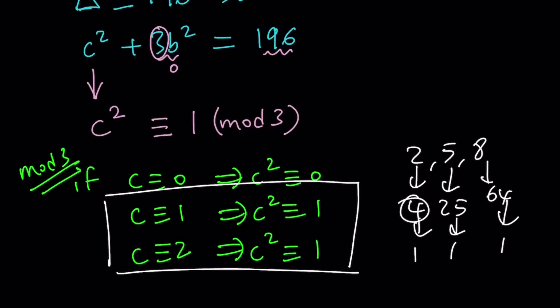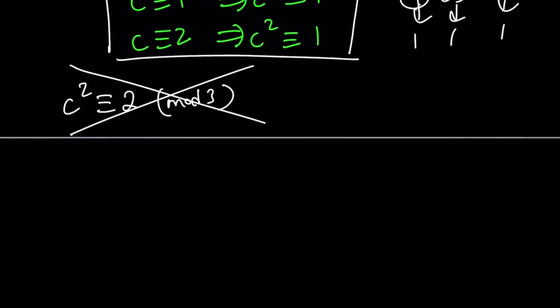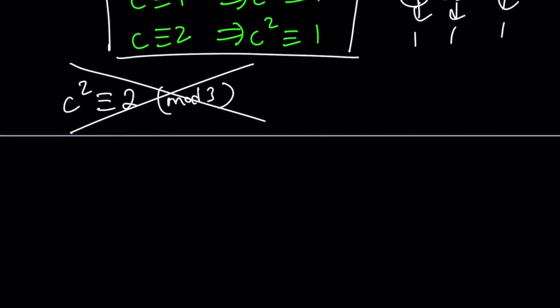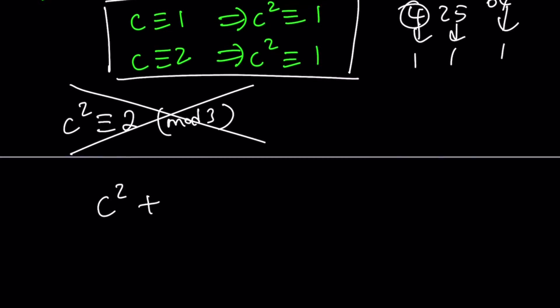You can never get a remainder of 2 upon division by 3 when a number is squared. So if someone says c squared is congruent to 2 mod 3, that equation has no solutions. Our c is not going to be a multiple of 3, and we have a nice equation to solve: c squared plus 3b squared equals 196.